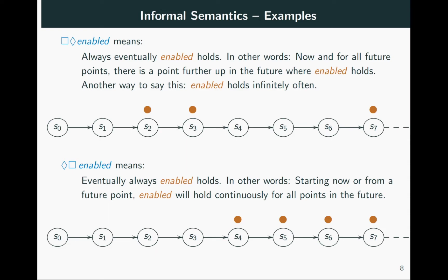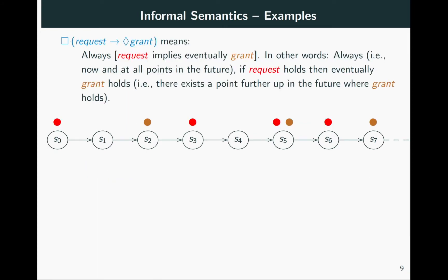Now, the next example says always (request implies eventually grant), meaning that for any point in time we might choose — current or future — assuming request holds, there will surely be a point further up in the future where grant will hold. So if we label with red the states where request holds and with brown the states where grant holds, every red-labeled state will eventually be followed by a brown-labeled state. This has to hold indefinitely throughout the entire path for the property to be true.